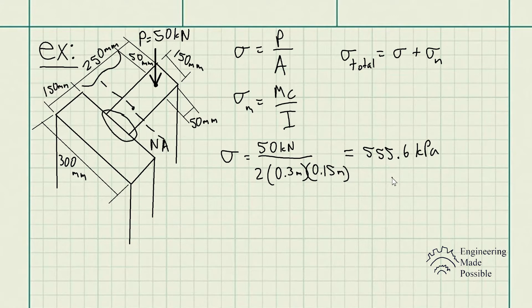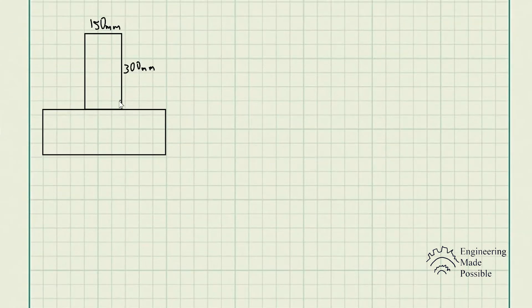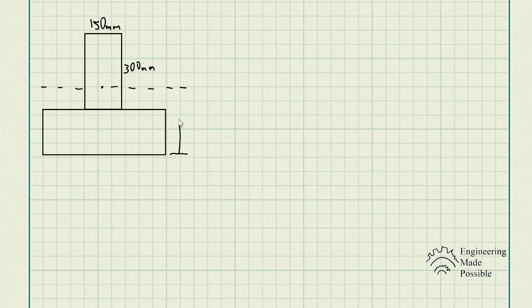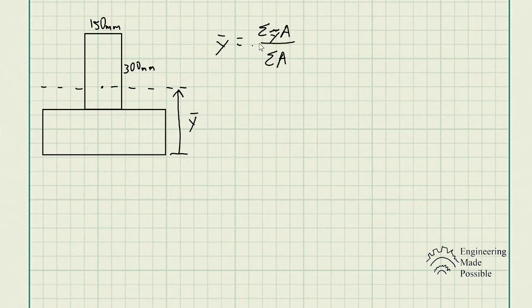Now, on to calculating the bending stress. First, we have to solve for the neutral axis, so let me redraw the cross-section to make it a little more clear. The centroid of this geometry is about this location — that's the neutral axis. I'm going to set my reference point at the bottom section of this geometry, and y-bar is the distance from the bottom to the neutral axis. When solving for the centroid, we use the equation: y-bar equals the summation of the centroid of each individual cross-sectional area times that area, divided by the summation of all the areas.